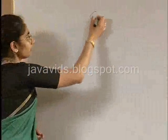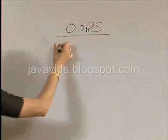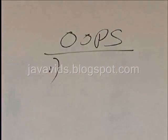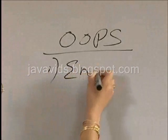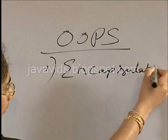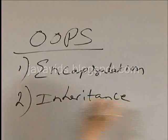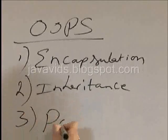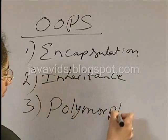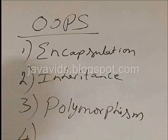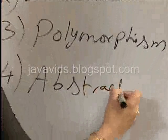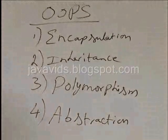Let's start off with OOPS concepts, as Java is an object-oriented programming language. Let's look at what are the features of OOPS. There are four features of OOPS: one, encapsulation; two, inheritance; three, polymorphism; and four, abstraction. Now let's look at these features in more detail.